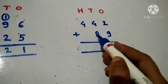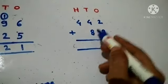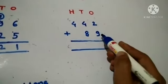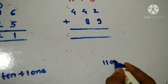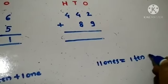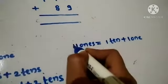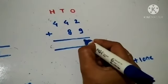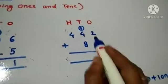Next example: 442 plus 89. 442 is 4 100's, 4 10's, and 2 1's. And 89 is 8 10's and 9 1's. Let's first add the 1's: 2 plus 9 is equal to 11 — that's 11 1's. 11 1's is equal to 1 ten plus 1 one. Write 1 in the 1's column and carry forward 1 ten to the 10's column.